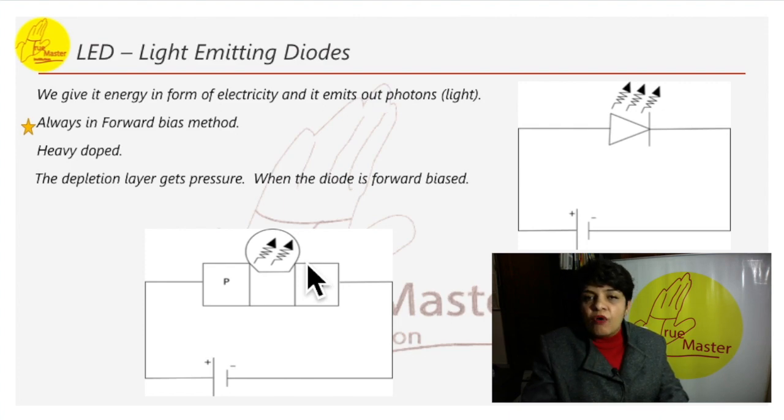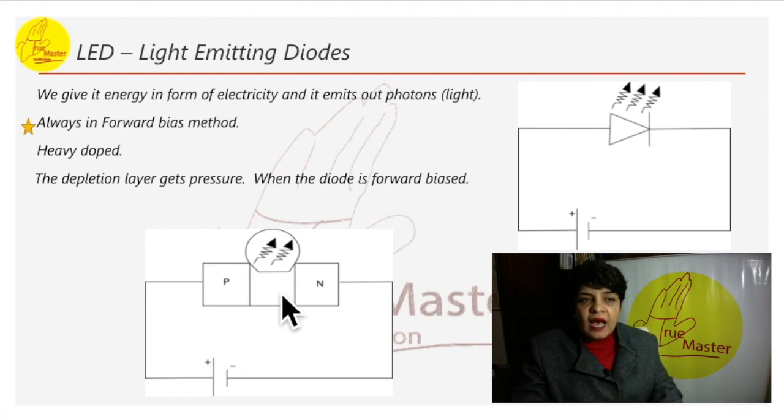It is always in a forward bias method. This P and N is heavily doped. It has high impurities. The depletion layer gets pressure when the diode is forward bias. In the symbol, as you can see, arrows outward show light is coming out. We give it energy in form of electricity and it omits out light from here.